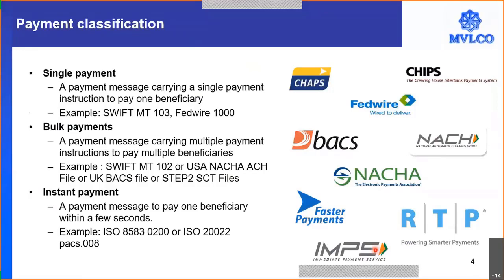Using instant payment systems, money moves from one side to the other within a couple of seconds. Such systems carry a single payment using messaging structures like ISO 8583 or ISO 20022. To summarize: for a single payment, systems like CHAPS in the UK, CHIPS or Fedwire in the USA, or RTGS and NEFT in India are used. For bulk payments — large numbers of payments in one single message — automated clearing houses like BACS, NACHA ACHs in the USA are used. For a single instant payment, typically small amounts apply.